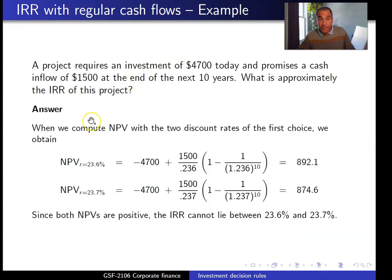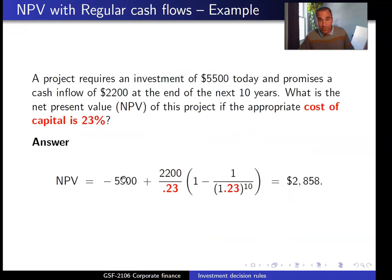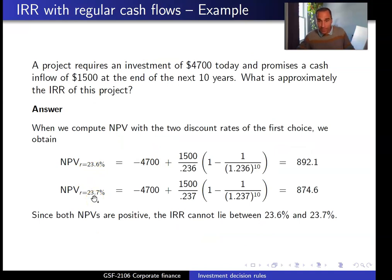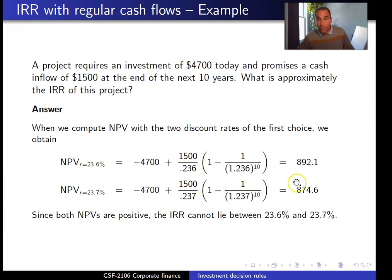Computing the NPV with the discount rates of choice A — 23.6% and 23.7% — nothing changes with respect to the initial investment, cash flow per year, or number of years; only the discount rate changes. At 23.6% we get an NPV of $892, and at 23.7% we get $874. There is no change in sign — both NPVs are positive — so this cannot be the correct answer. For choice B, computing NPV at 32.5% and 32.6% yields two negative values, meaning both rates are larger than the IRR, so this is also incorrect.